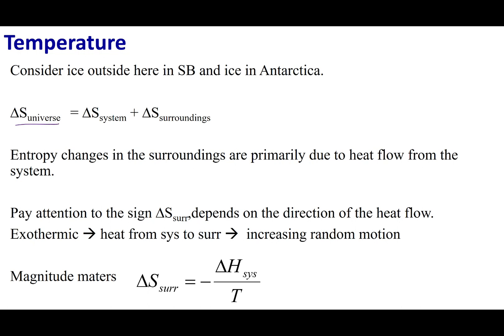For a spontaneous process, delta S of the universe has to be greater than zero, and the universe is made of the system and surroundings. For the system — melting ice, going from solid water to liquid water — liquid is more disordered than solid. So delta S of the system is going to be positive because we are going to more disorder. That takes care of the system; now we need to figure out delta S of the surroundings.